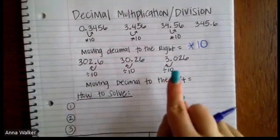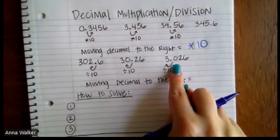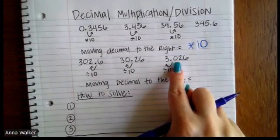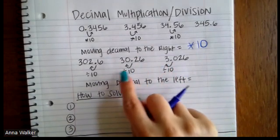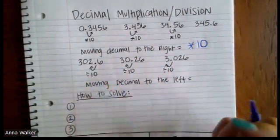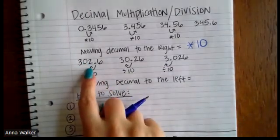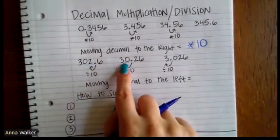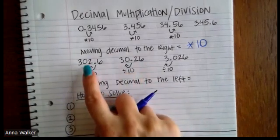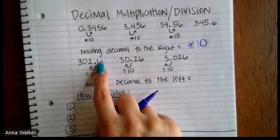And then the opposite is true if we move the decimal place to the left. So if you look at starting over here on the right-hand side, when we move our decimal one place back, what we're doing is we're dividing by 10. We should have started at this point. If we moved it one place back, now it's 30.26. That's the same thing as if we took 302.6 and divided it by 10.